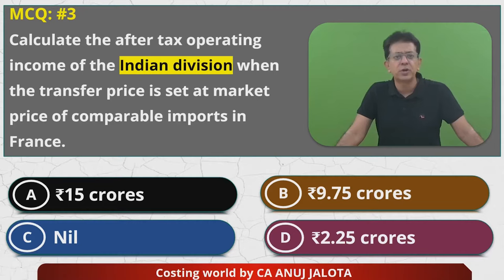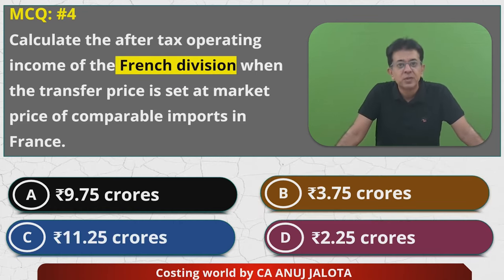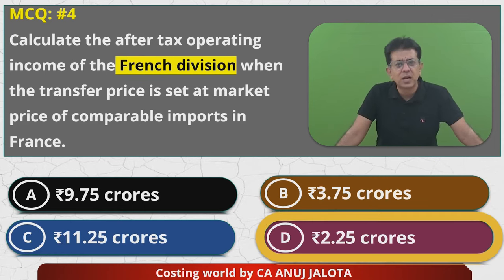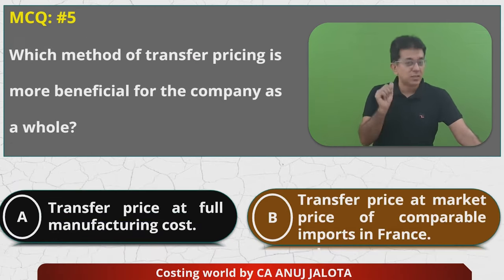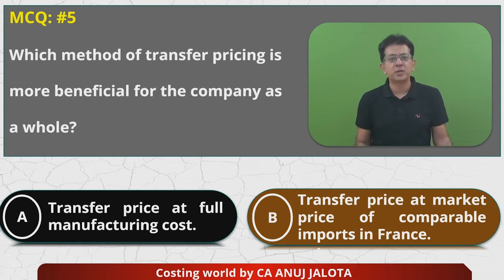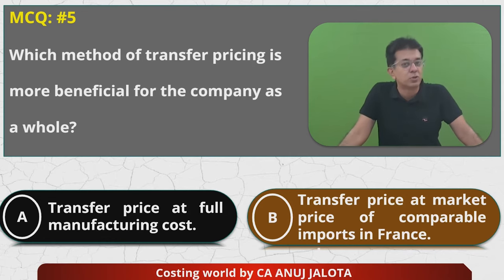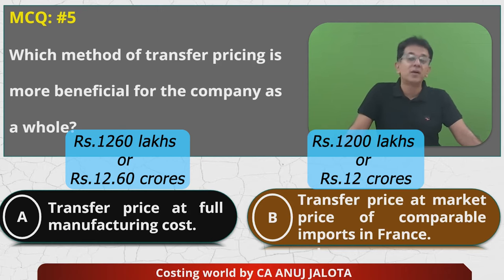MCQ 3 answer: ₹975 lakhs = ₹9.75 crores (Indian division profit). MCQ 4 answer: ₹225 lakhs = ₹2.25 crores (French division profit). MCQ 5 asks which method of transfer pricing is more beneficial for the company as a whole. If transfer price was ₹12,000, total profit was ₹1,260 lakhs; if ₹15,000, profit falls to ₹1,200 lakhs. So the first method (TP = ₹12,000) is better — answer is A.